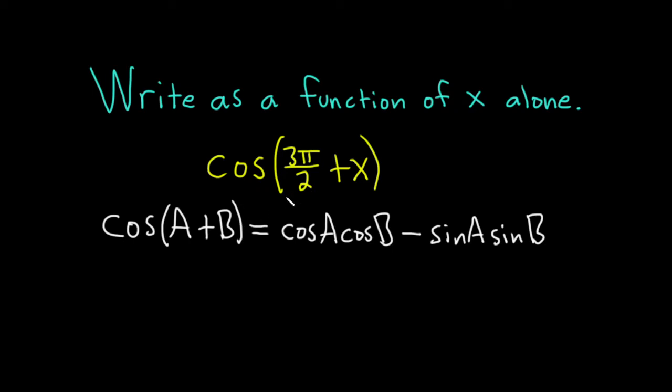Okay, so in our problem here A is 3π/2 and B is our x. So let's go ahead and write it down over here. So we have the cosine of 3π/2 plus x.